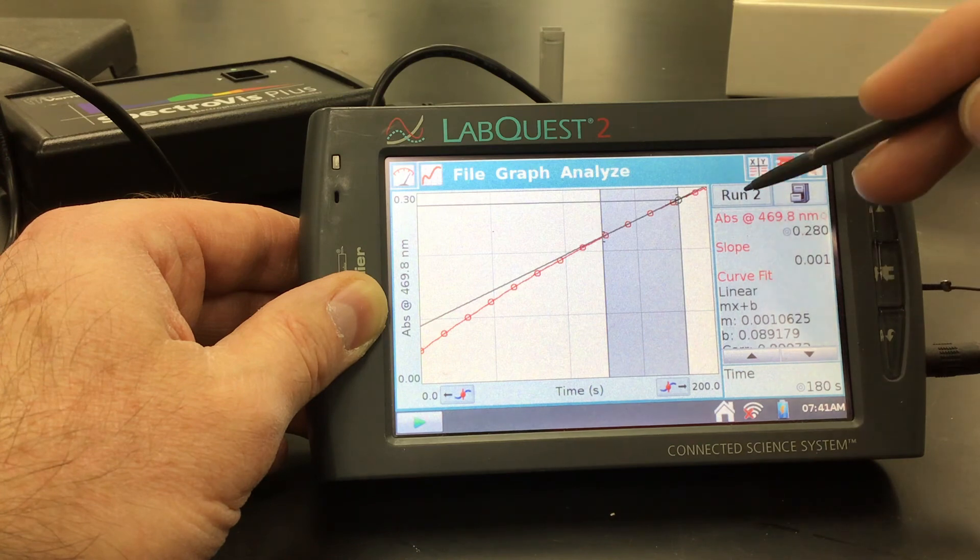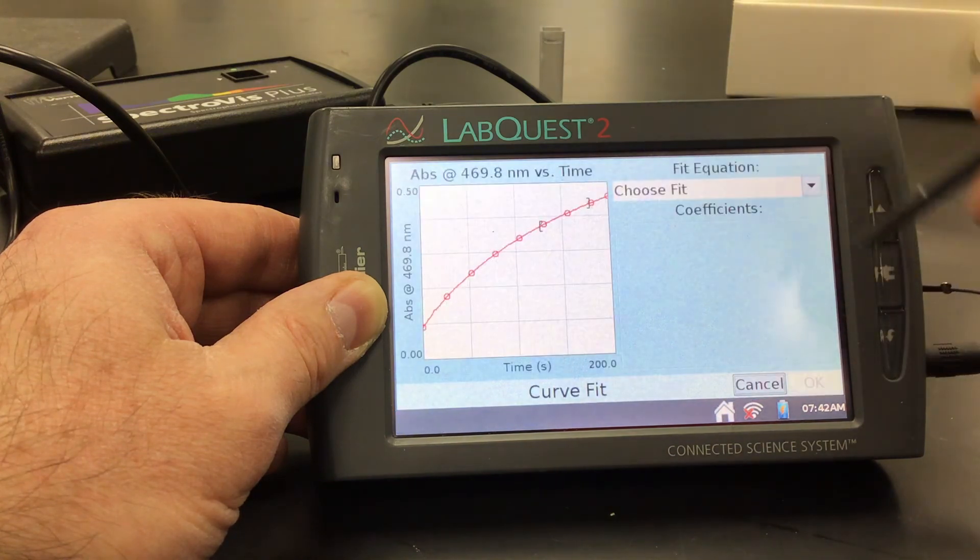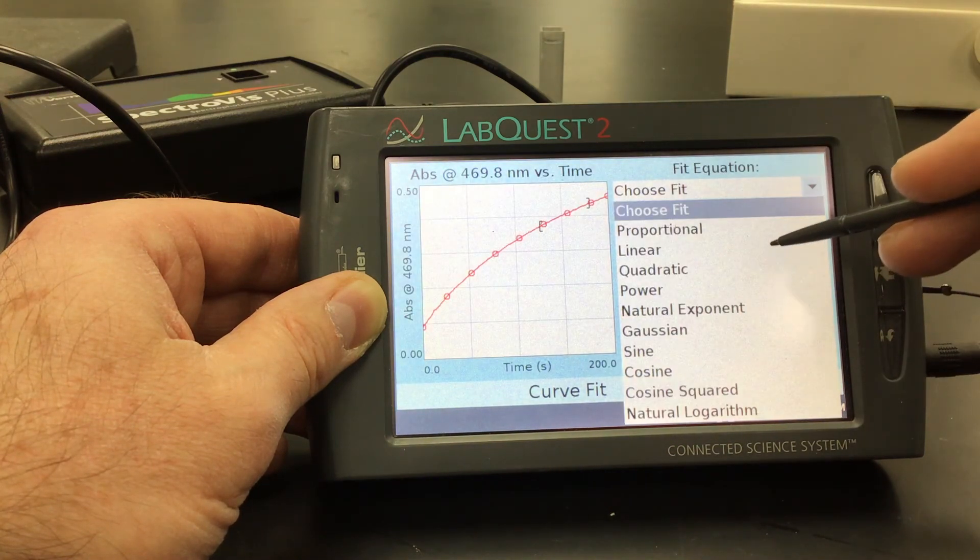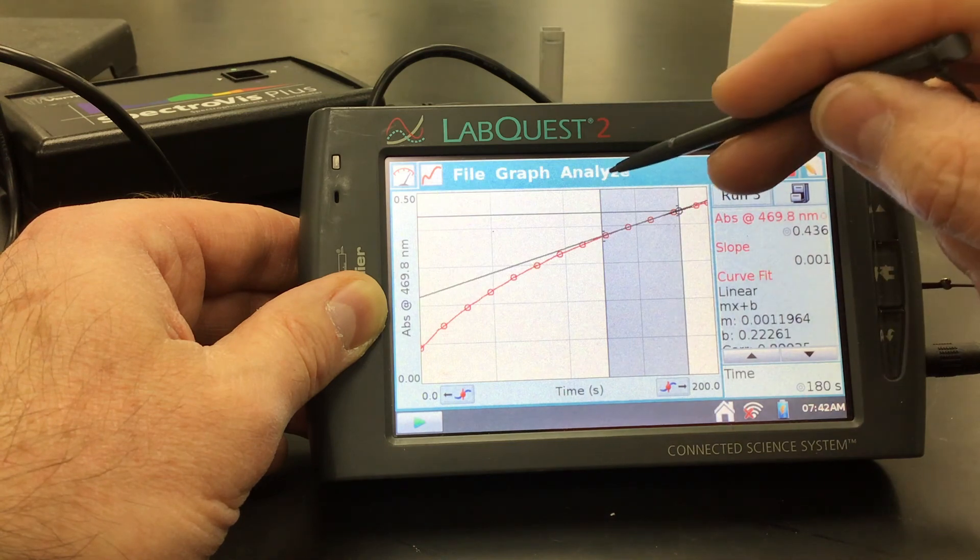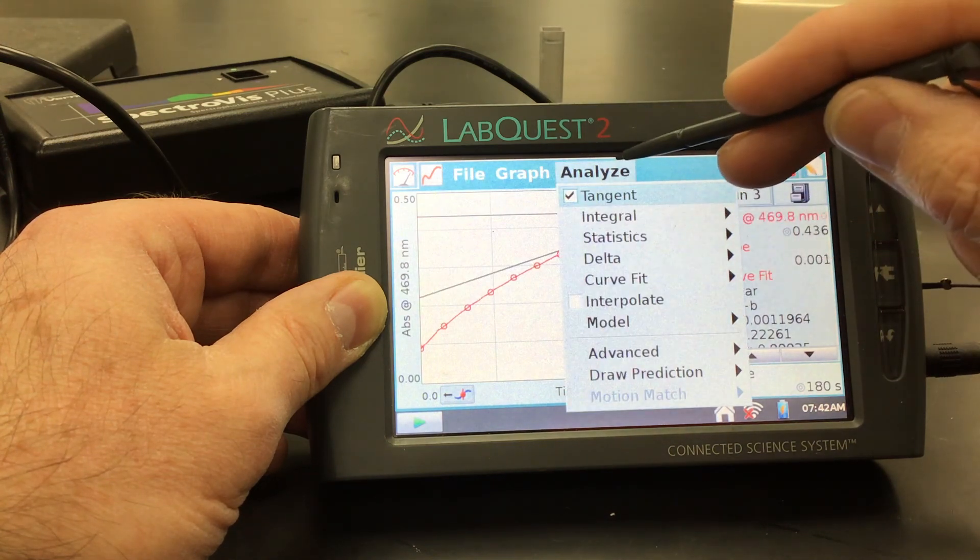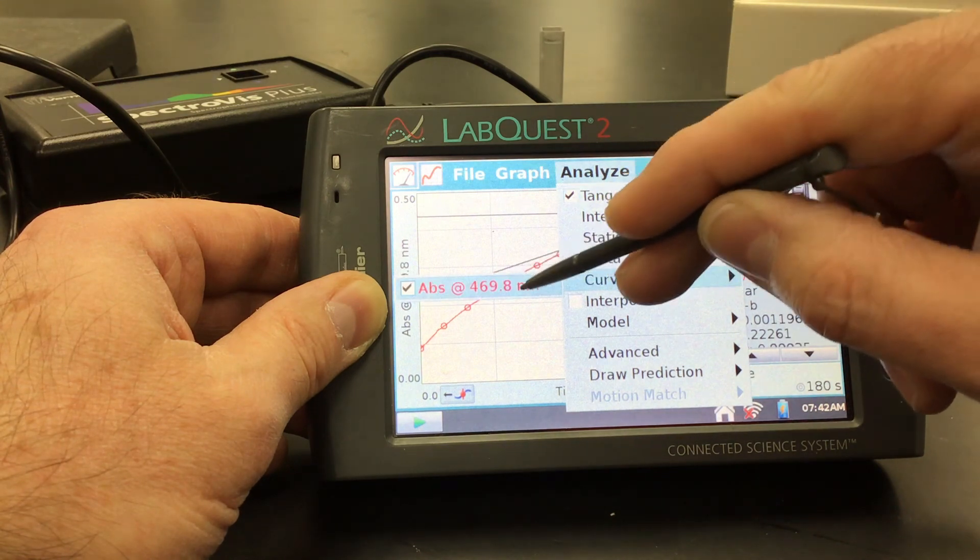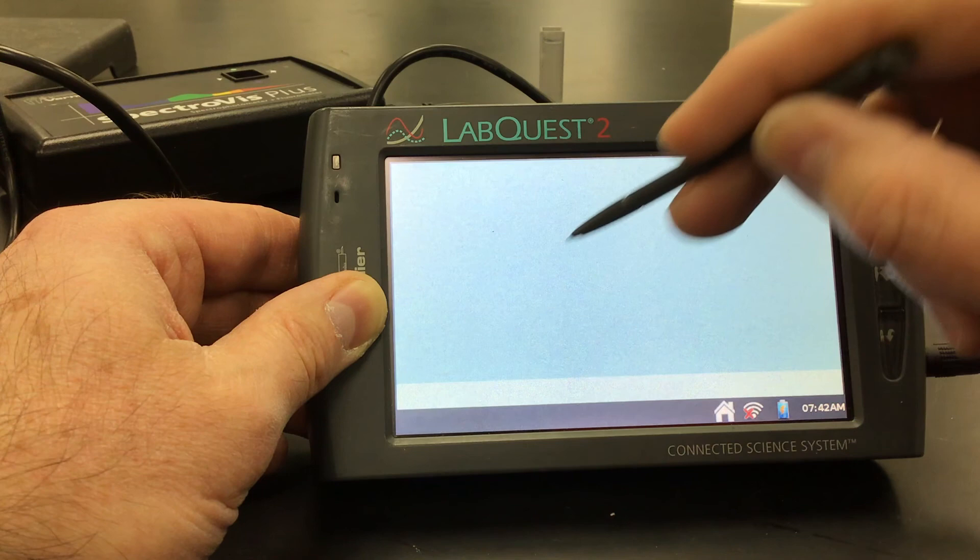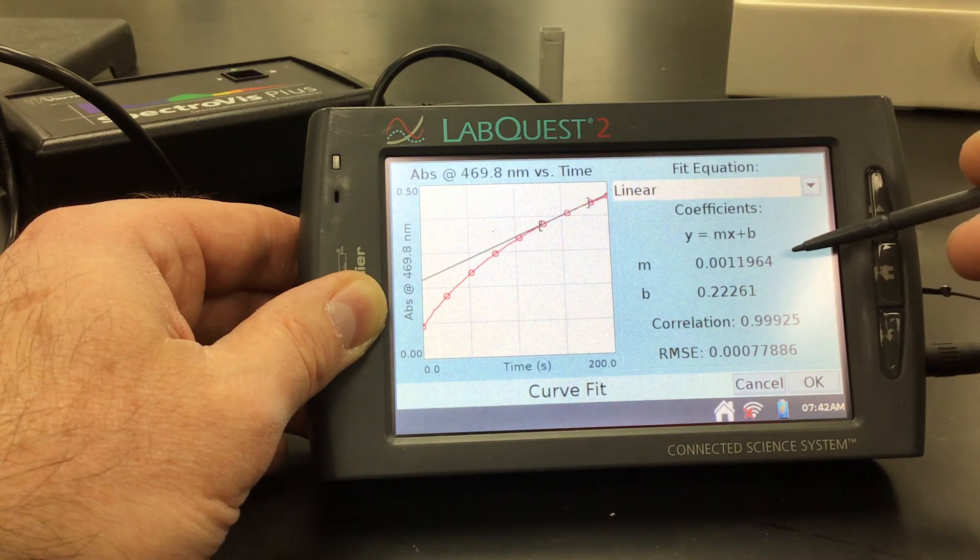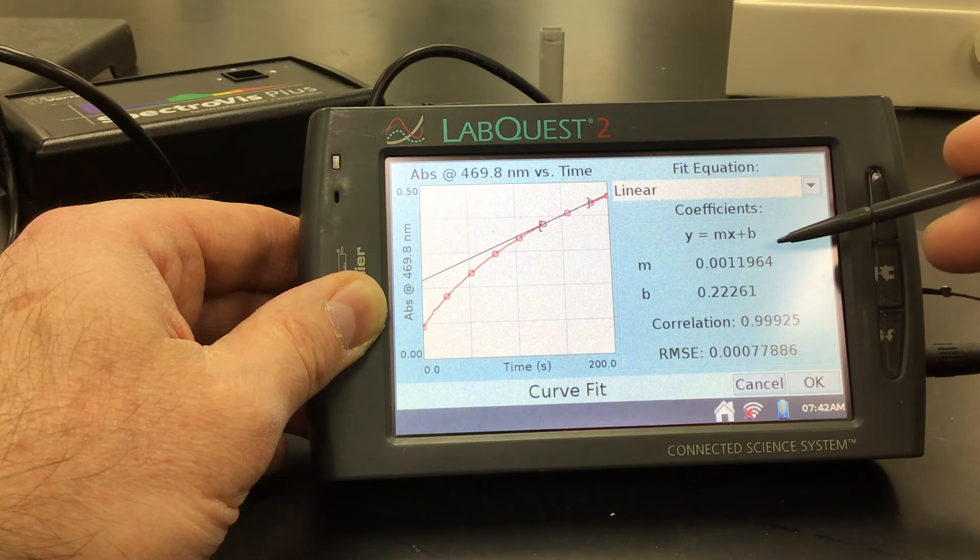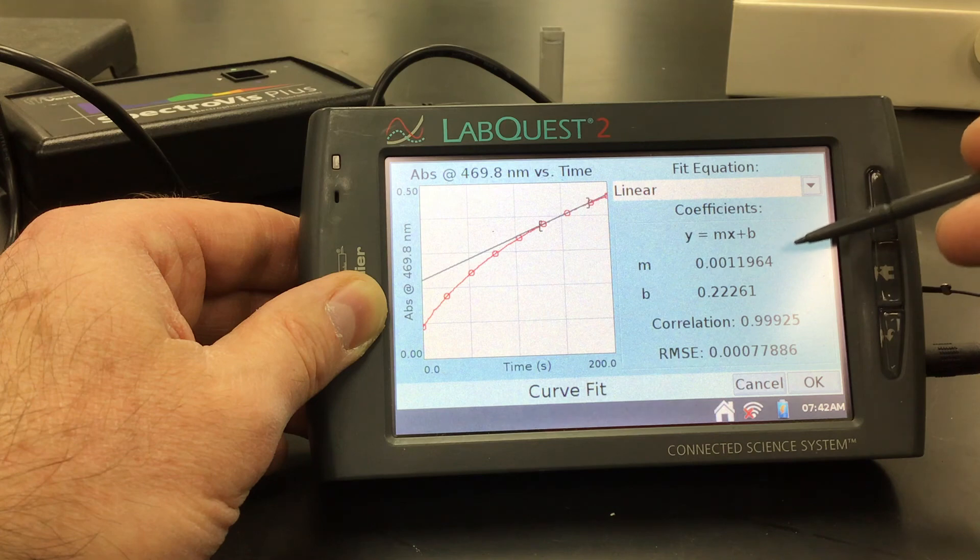And then lastly, we'll do our third run. Same idea. And then let me go actually go back and to see what that was. I did it really quickly here. Go back and do it again. So for our third one, we had our initial rate as 0.0011964. That's our initial rate, which is our slope.